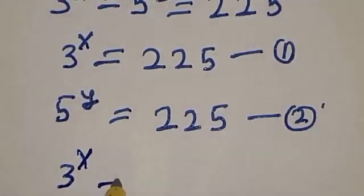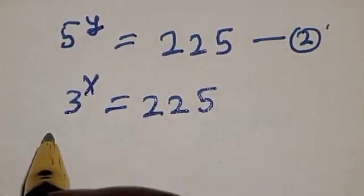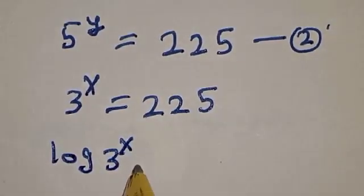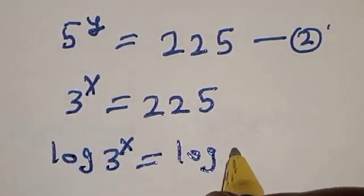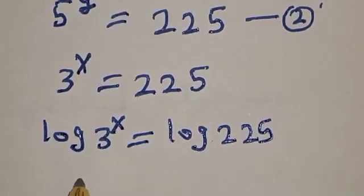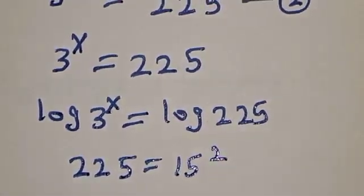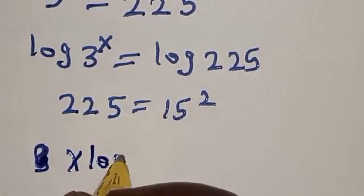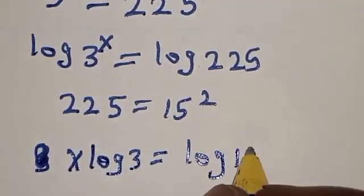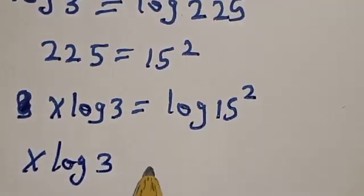3 raised to power x is equal to 225. Let's take the log of both sides: log 3 raised to power x is equal to log 225. And remember, 225 is equal to 15 squared.